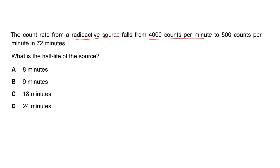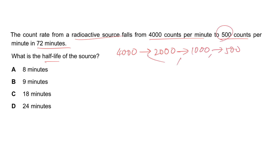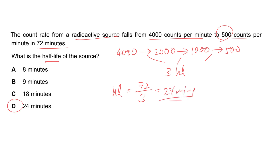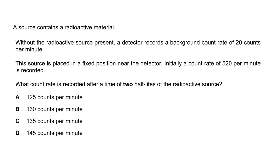In Question 9, the count rate falls from 4,000 to 500 counts per minute in 72 minutes. Starting from 4,000: → 2,000 → 1,000 → 500. Three half-lives have passed in 72 minutes. Half-life = 72 ÷ 3 = 24 minutes. The answer is D.